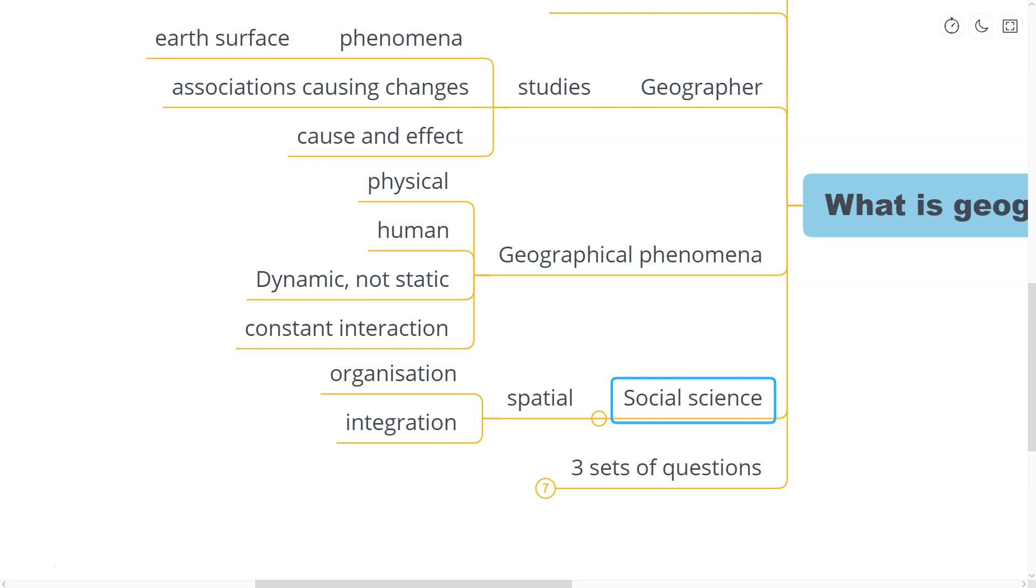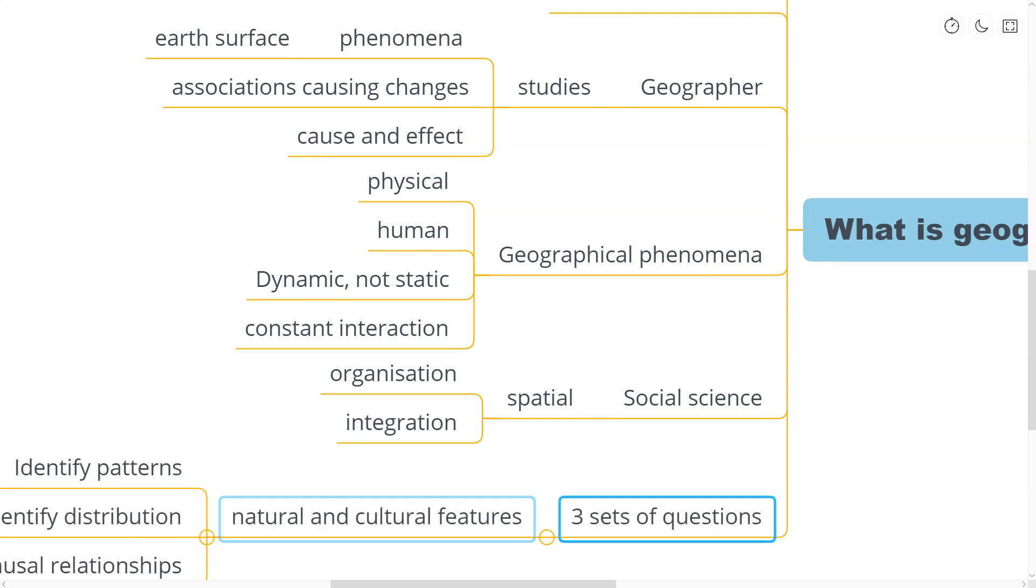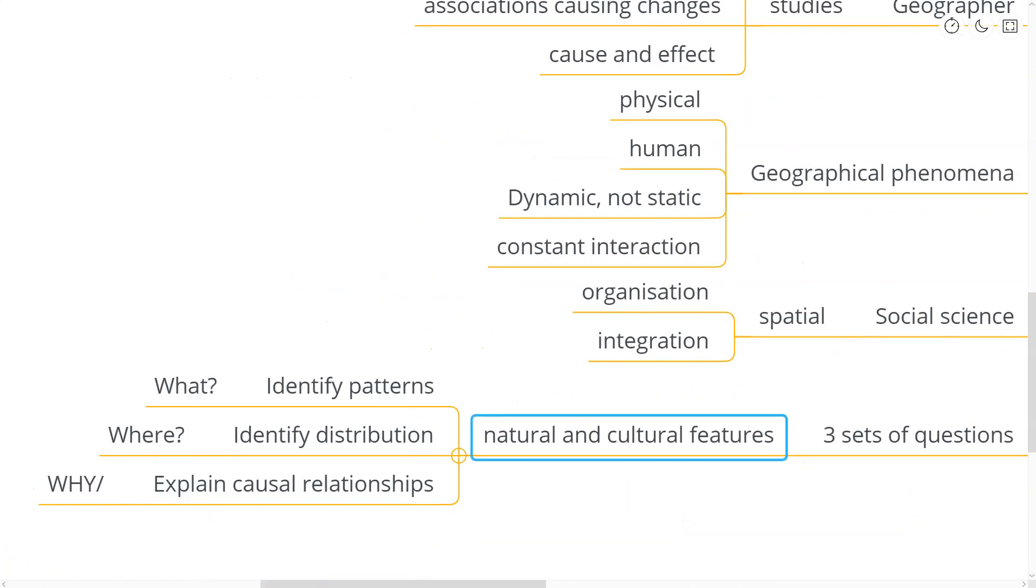You can think about geography as a discipline that is concerned with three distinct sets of questions. All these three questions are related to the natural and cultural features. The first question is about identifying the patterns of natural and cultural features as found over the surface of the earth. These are essentially the questions of what. Then, some questions are related about identifying the distribution of the natural and human or the cultural features over the surface of the earth. These are essentially the questions of where. Taken together, the questions of what and where take care of the distributional and the locational aspects of the natural and cultural patterns.